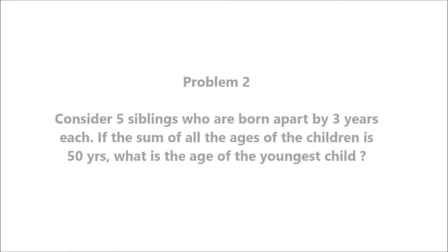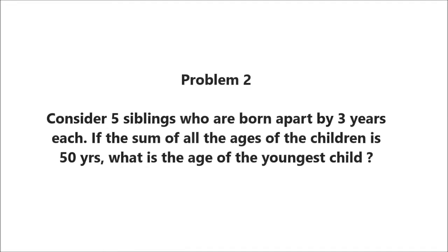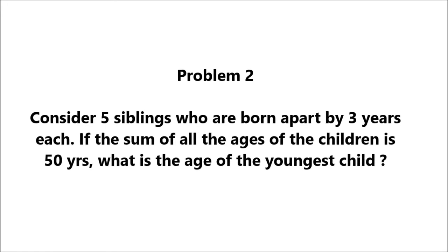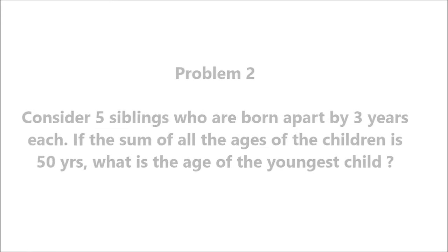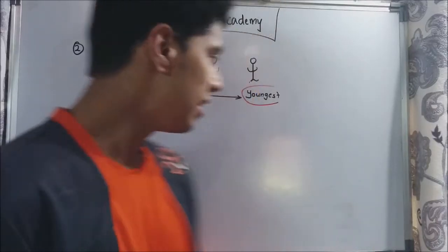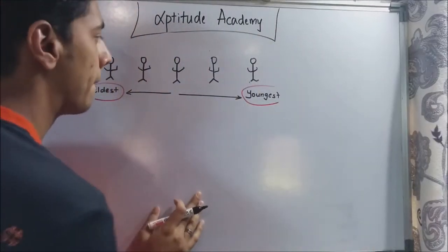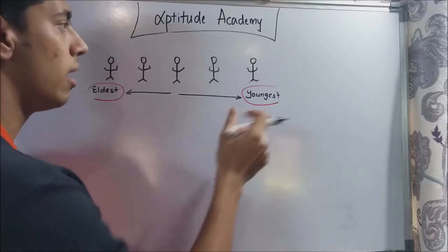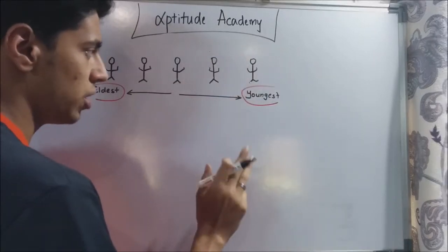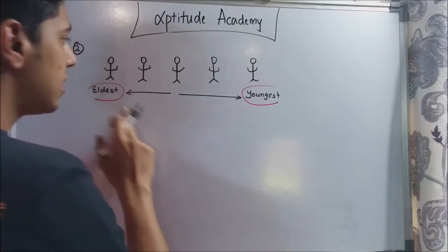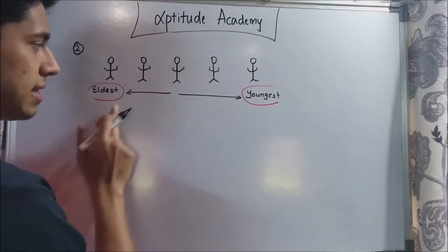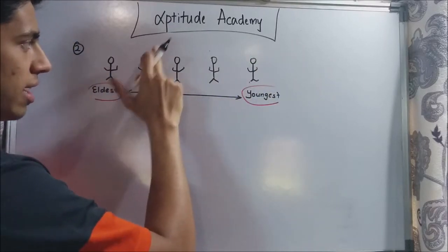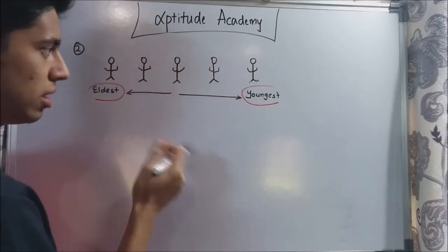Problem two: consider five siblings who are born apart by three years each. If the sum of all their ages is 50 years, what is the age of the youngest child? For this problem, we have five children. They are born at an interval of three years each, and their ages sum to 50. The youngest is on one end and the eldest on the other. The eldest was born first, and the rest followed at three-year intervals.